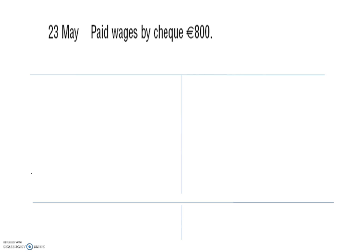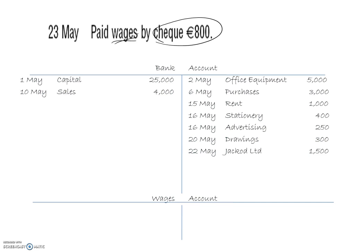23rd of May: paid wages by cheque. Cheque implies bank, and wages are another type of expense just like stationery. So we have the bank and we open up a wages account. Money coming out: we credit the bank and debit the wages account. All expenses generally will be debit entries.